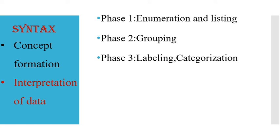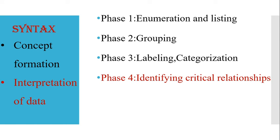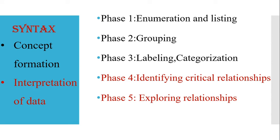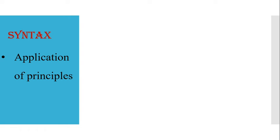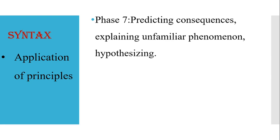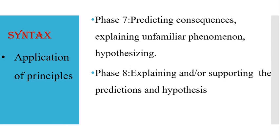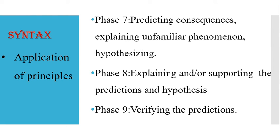The next three phases are interpretation of data. Phase 4: identifying critical relationships. Phase 5: exploring relationships. Phase 6: making inferences. The last three phases are application of principles. Phase 7: predicting consequences, explaining unfamiliar phenomena and hypotheses. Phase 8: explaining and/or supporting the predictions and hypotheses. Phase 9: verifying predictions. The syntax contains a total of nine phases.